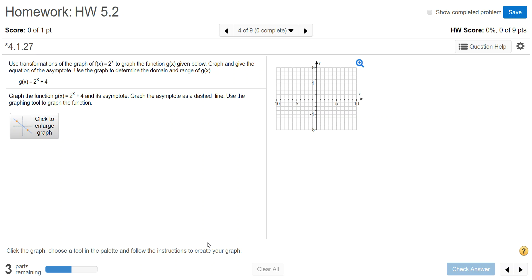In this example we're going to look at how to graph an exponential function on MyMathLab with a vertical transformation. We want to use the transformations of the graph f(x) = 2^x to graph the function g(x).